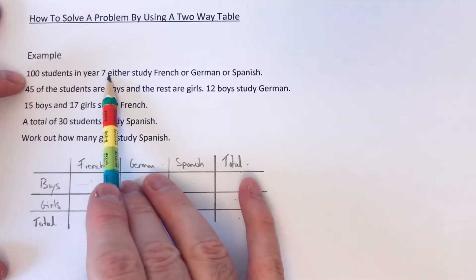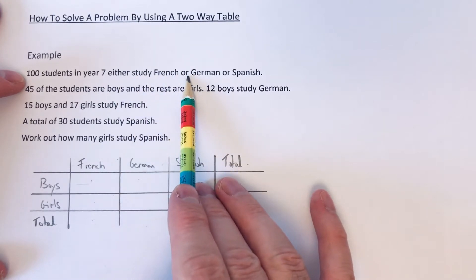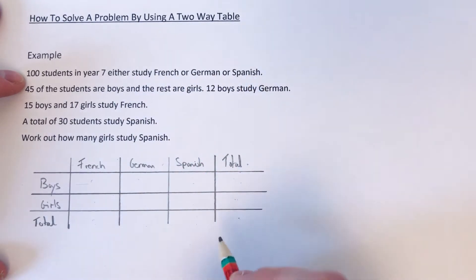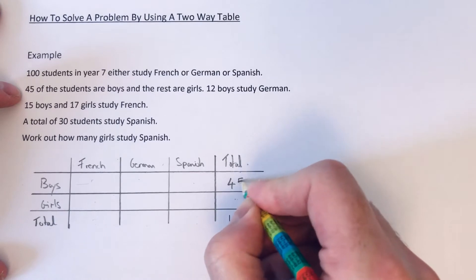So we've got 100 students in Year 7. They either study French, German or Spanish. So that would be the total which we put in the bottom right hand corner. The next bit is 45 of the students are boys and the rest are girls. So we've got 45 boys, so we put that there.